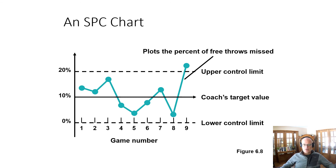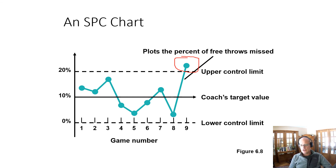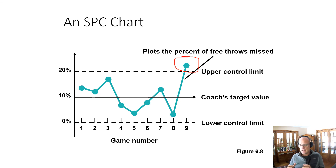Here's a basketball example: missed free throws. The coach's target is 10%, the lower control limit is 0%, and the upper control limit is 20%. People have good days or bad days. Here is one where we've gone above 20% of misses — in that circumstance, we should investigate whether something is going on and why we're seeing those misses. There are a variety of tools you can use in managing quality, from simply collecting data with a checklist to brainstorming causes with a fishbone diagram, to a simple histogram to look at distributions, all the way to the complexity of a statistical process control chart. All of them have a role to play in managing quality and are all things that we should be thinking about.